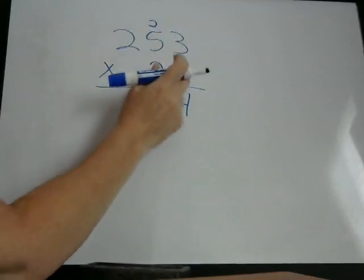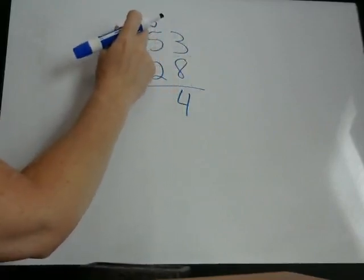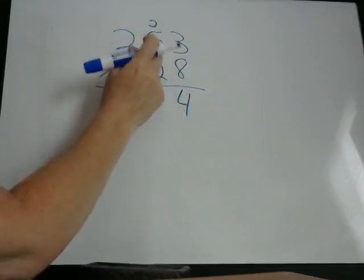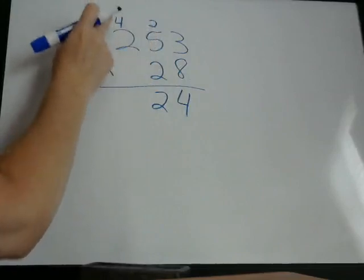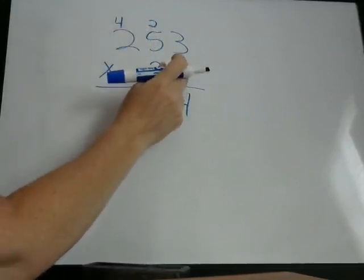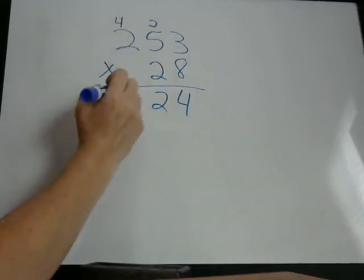Then we go to the next one. 8 times 5, which is 40, plus 2, because we carried the 2. So it's 8 times 5 is 40, plus 2 is 42. And we write that 42. 8 times 2 is 16, plus 4 is 20.